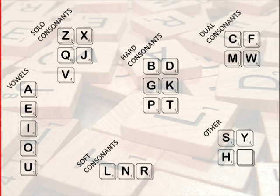The groups we have are hence vowels, soft consonants, hard consonants, medium consonants, solo consonants, and the unique H, Y, S, and blank — making 27.